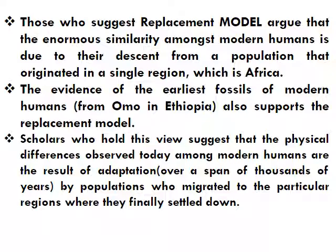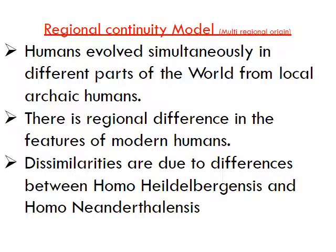Those who suggested the Replacement Model argued that the enormous similarity among modern humans is due to their descent from a population that originated in a single region — Africa. The evidence of the earliest fossils of modern humans also supports the Replacement Model. Scholars holding this view suggested that physical differences observed today among modern humans are the result of adaptation over thousands of years by populations who migrated to the particular regions where they finally settled.